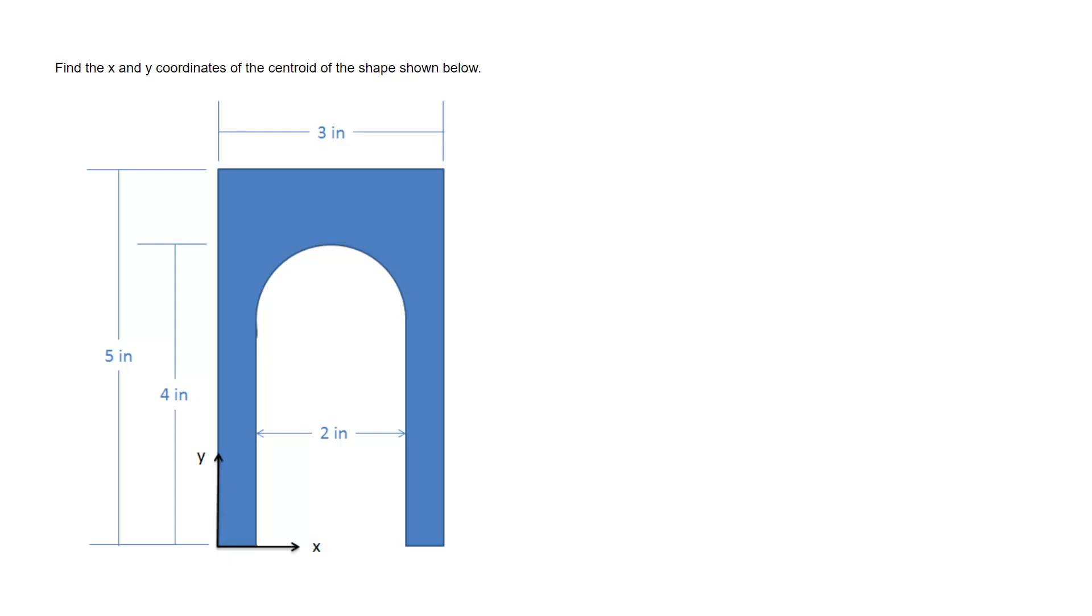This shape here is kind of like an arch shape and the first thing we need to do is break this down into pieces that are available in our centroid table. To do that, I took a large rectangle that encompasses the whole thing, and if we subtract out two shapes, particularly a semicircle up here and a rectangle down here, shape 2 and shape 3 respectively, we wind up with this overall shape that we have right here.